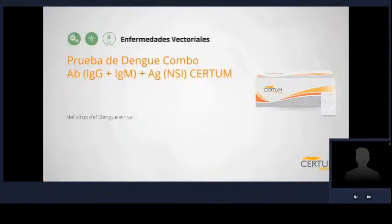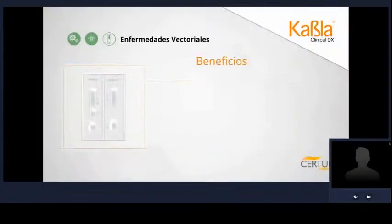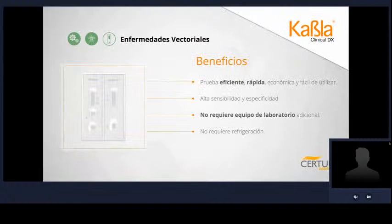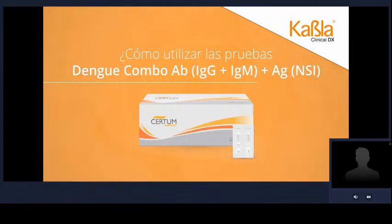En KABLA contamos también con pruebas rápidas para el diagnóstico de dengue, como la prueba rápida Dengue Combo NS1 Ag-IgG-IgM, un inmunoensayo cromatográfico rápido para la detección cualitativa del antígeno NS1 y los anticuerpos IgG e IgM del virus del dengue en sangre entera humana, suero o plasma, como ayuda en el diagnóstico de infecciones de dengue.